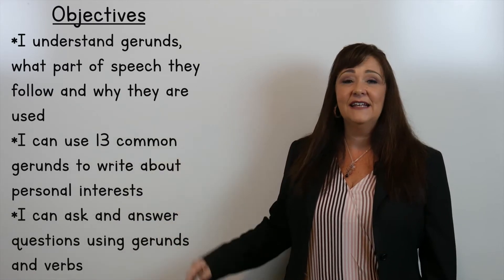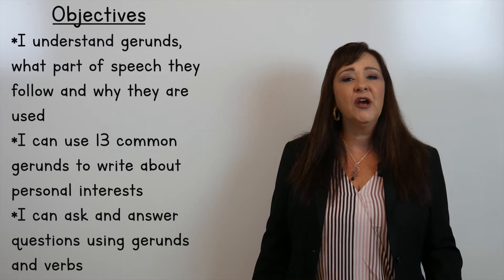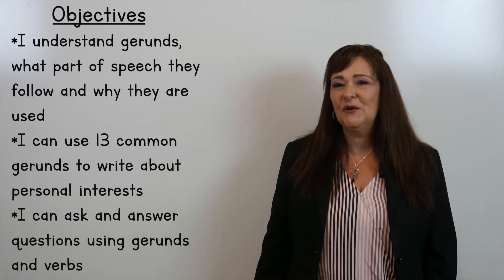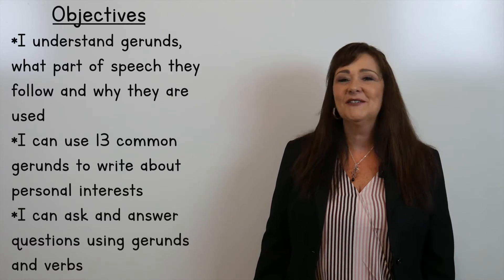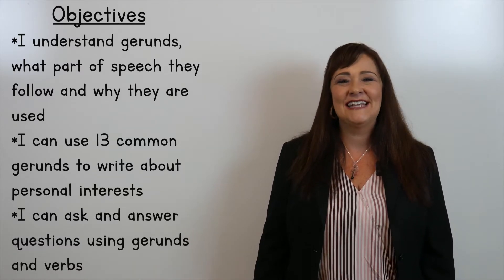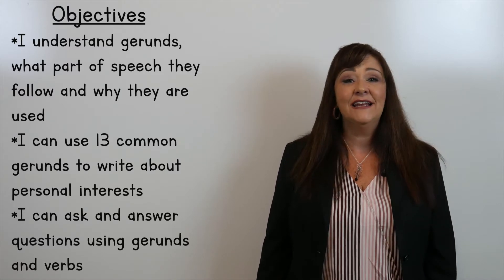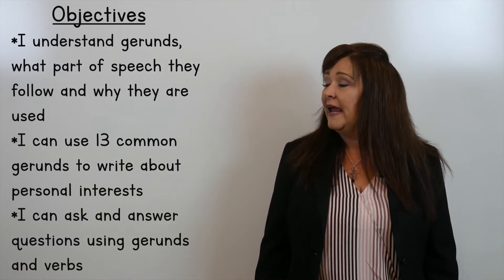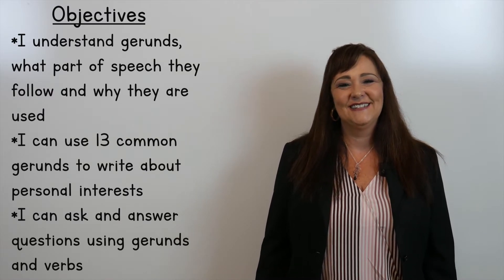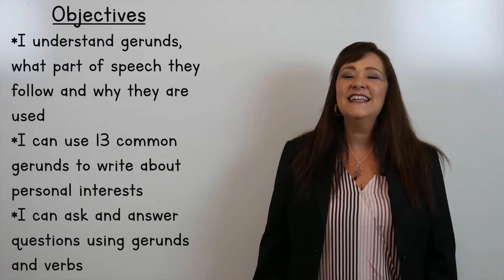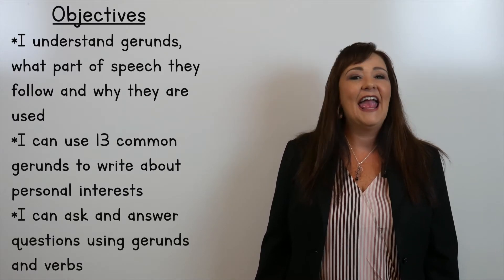The first objective says: I understand gerunds, what part of speech they follow, and why they are used. Do you know what a gerund is? It's okay if you don't, because that's what we're going to learn today. The next objective says: I can use 13 common gerunds to write about personal interests. And then the last objective says: I can ask and answer questions using gerunds and verbs. Sound confusing? That's why we're here to learn.